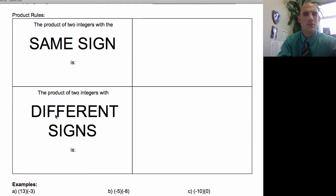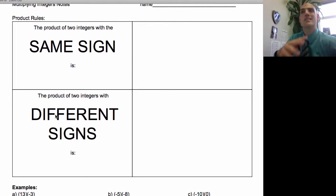Welcome back. Today we're going to talk about multiplying integers and there's basically just two product rules. One of them you already know, it's just an extension, but we're going to look at what it means. So let's start.